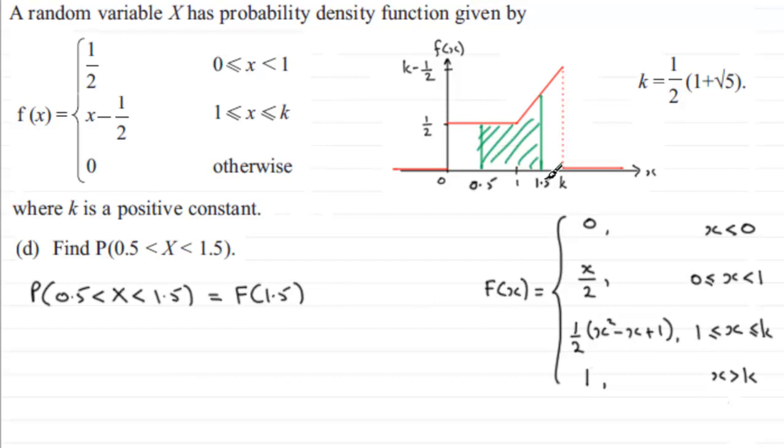the area to the left of 1.5, minus F of 0.5, the area to the left of 0.5. Both these represent the probabilities of being less than these two given values.